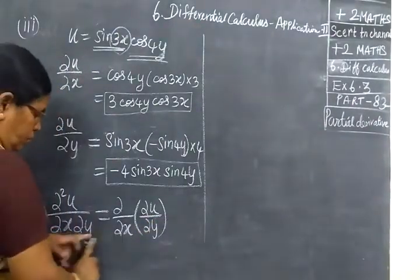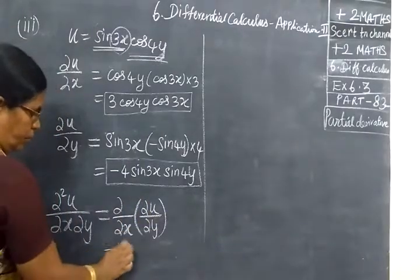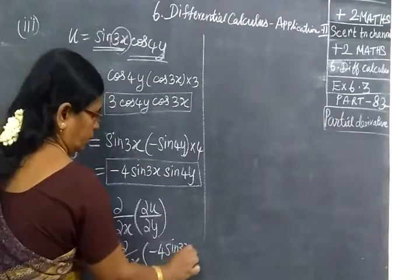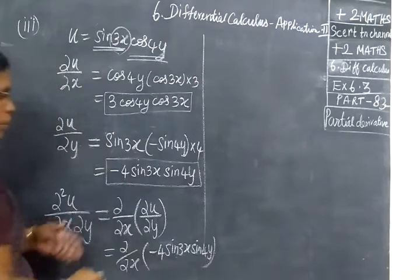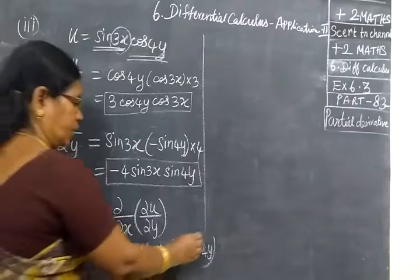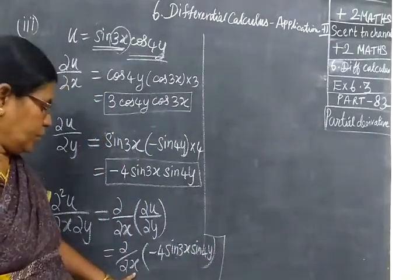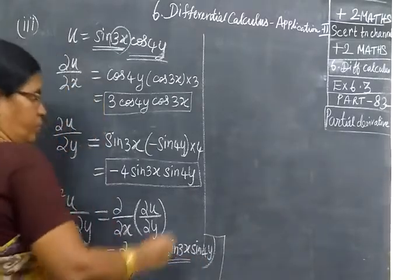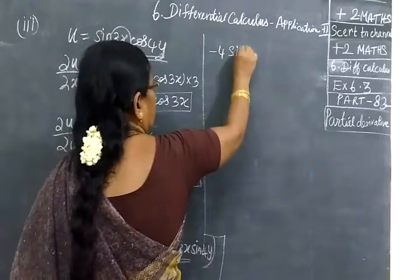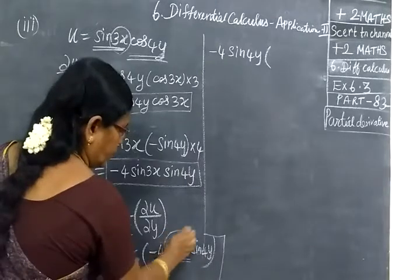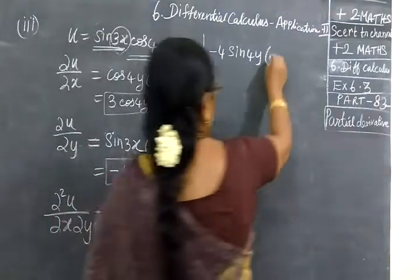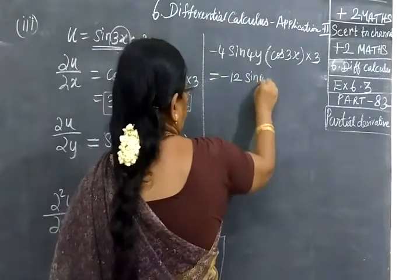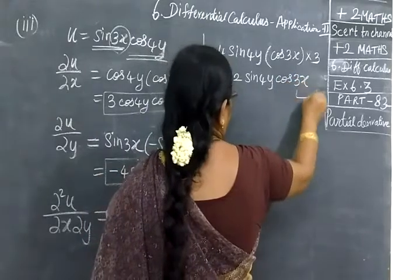So equal to d/∂y of ∂u/∂y, which is minus 4 sin(3s) sin(4y). Now we are partially differentiating with respect to s alone. So write minus 4 sin(4y), then sin(3s) differentiating gives cos(3s) into 3. So equal to minus 12 sin(4y) cos(3s). Mark this as equation 1.